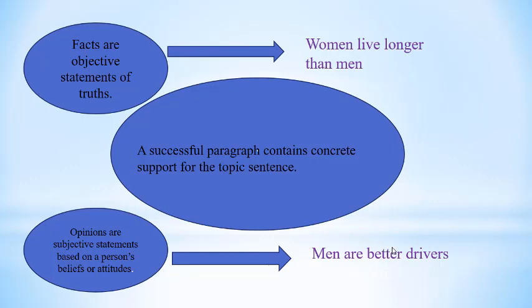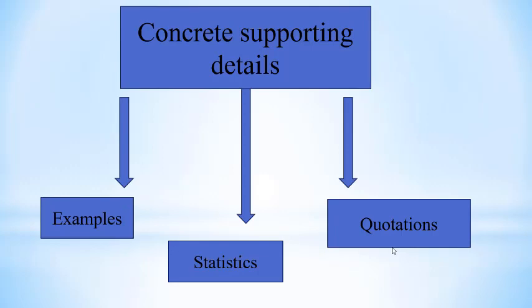If you express an opinion, you must support it with facts. Facts are objective statements or truths — for example, 'women live longer than men.' Sometimes even facts need proof. While such statements may be facts, readers may not believe them or may not agree, so you have to use specific supporting details to prove they are true. Kinds of supporting details include examples, statistics, and quotations.